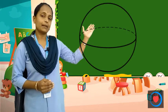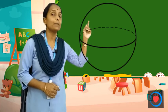The next one is sphere. देखो, इसका एक्जाम्पल है — basketball, orange, marbles. Okay?